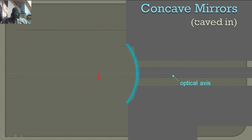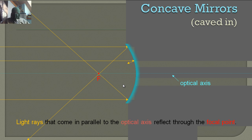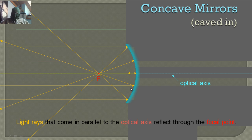Concave mirrors cave in. Light rays come in and bounce off. Light rays that come in parallel to the optical axis reflect through the focal point — they all come in parallel and they're all going to meet at that focal point.